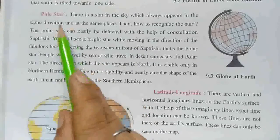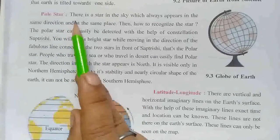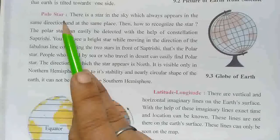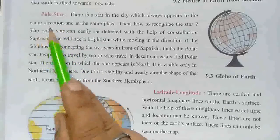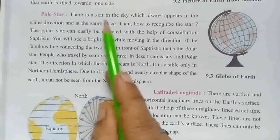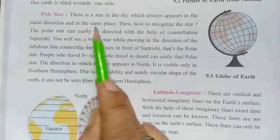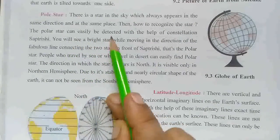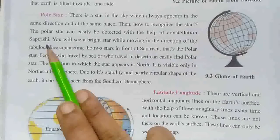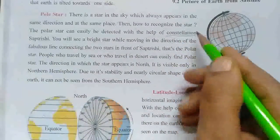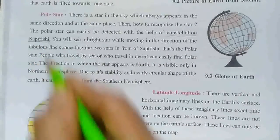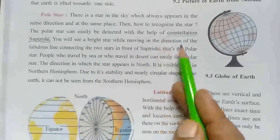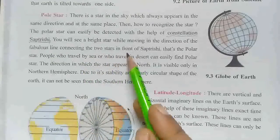Now let us study about the pole star. If you have to find the pole star, you have to look at the sky at night. There is a star in the sky which always appears in the same direction at the same place. The pole star can easily be detected with the help of the constellation Saptarshi. You will see a bright star while moving in the direction of the line connecting the two stars in the front of Saptarshi — that is the pole star.